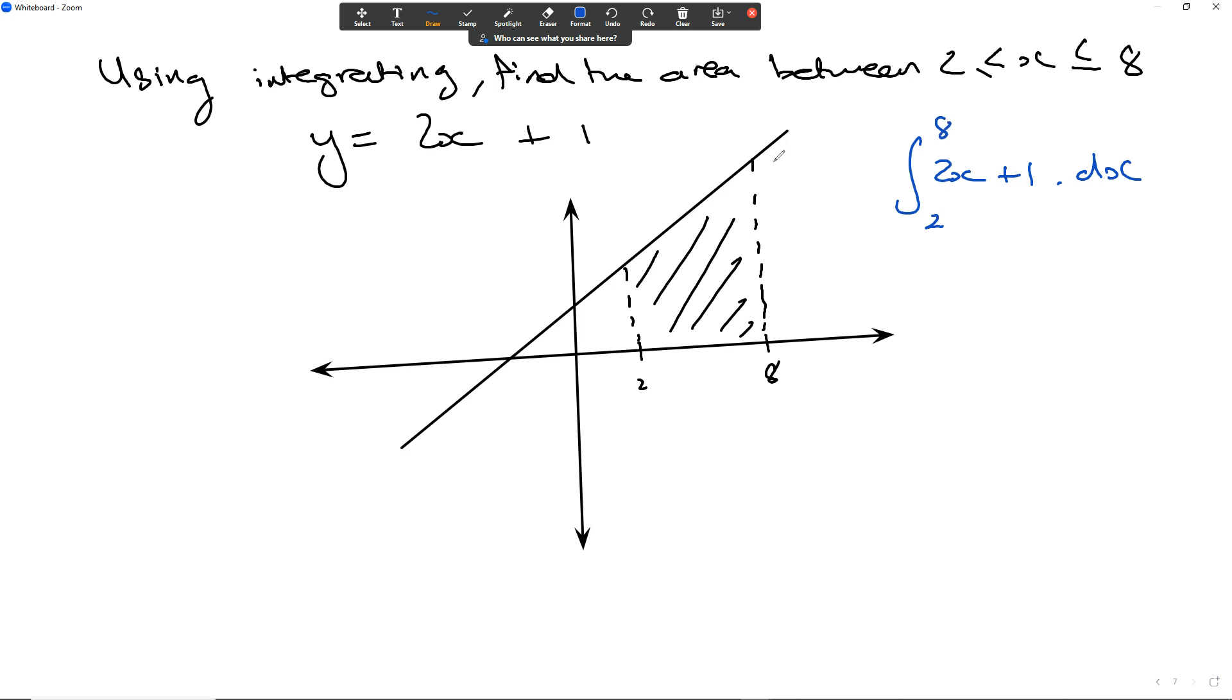So once we integrate this, remember we take each power plus 1 and then divide it by that. This just becomes x added onto it. And instead of adding c onto it like we would on a normal day if it was an indefinite integral, we don't have to worry about that. So we're going to keep it like that from 2 until 8. The 2's cancel, leaving me with x squared plus x from 2 until 8.